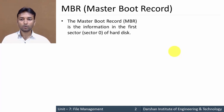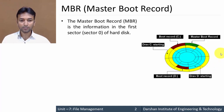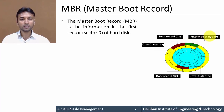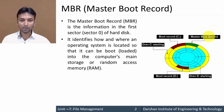Master Boot Record is nothing but information that is in the first sector, or sector 0, of your hard disk. This is a structure of our hard disk, and whatever information is stored on the first sector — sector 0 — is nothing but the Master Boot Record, that is MBR.